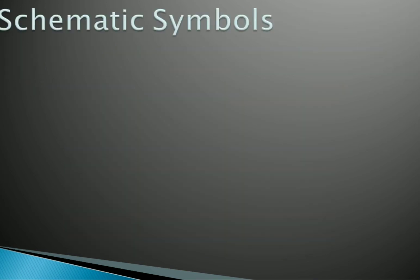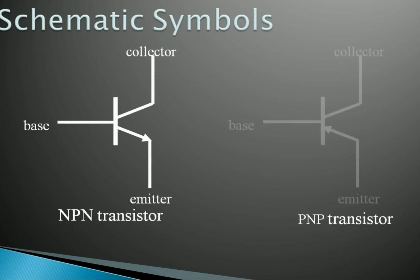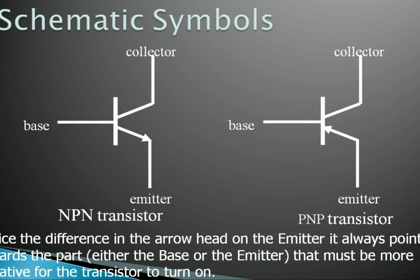Now the schematic symbols. This is the NPN transistor — see collector, base, and emitter; the arrow is on the emitter side. Then it is the PNP transistor where the same things are there — collector, base, and emitter — but the arrow points from the emitter to the base. The arrowhead on the emitter is always pointing towards the part, either the base or the emitter, that must be more negative for the transistor to turn on.